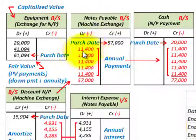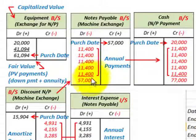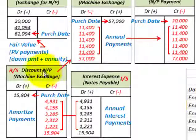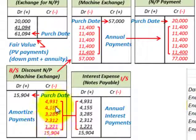For notes payable, each annual payment of eleven thousand four hundred dollars is recorded over the five years, totaling fifty-seven thousand dollars, which cancels out the notes payable balance. Cash is credited by eleven thousand four hundred dollars each year. Total cash paid over the contract, including the down payment, is seventy-seven thousand dollars — the original purchase price of the machine. The discount on notes payable is then amortized each period.